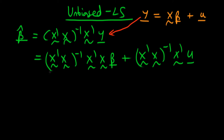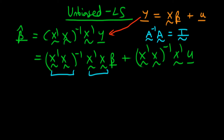How can we simplify this? Well, (X'X)⁻¹ times (X'X) is a matrix inverted times itself, and we know from the definition of the matrix inverse that this is just the identity matrix. The identity matrix times beta is just the vector beta. So the first term simplifies to just beta, and the second term is (X'X)⁻¹ times X'u.